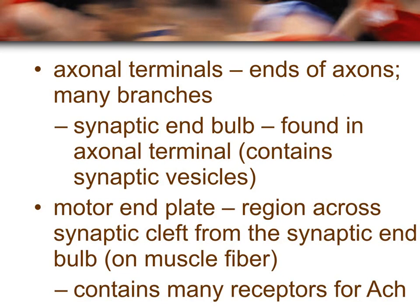Axonal terminals are the end portion of the axon, and there can be many different branches. At the end is an enlarged portion called the synaptic end bulb, where the synaptic vesicles are located. The motor end plate is the area on the muscle cell where the junction between the motor neuron and the muscle occurs, and it contains the receptors for the neurotransmitter acetylcholine.